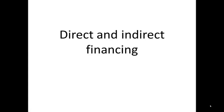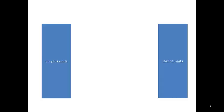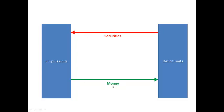This video clip explains the difference between direct and indirect financing. In the economy we have surplus units and we have deficit units. Deficit units are in need of funds, while surplus units have excess funds which they wish to invest. The deficit unit can then issue financial instruments, also called securities, to the surplus units. And the surplus units in return provide their savings to the deficit units.